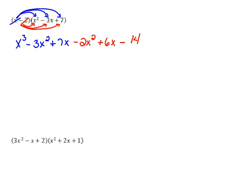Now we've completely distributed the negative 2. So we are done with the distribution. Now it's a matter of collecting like terms.